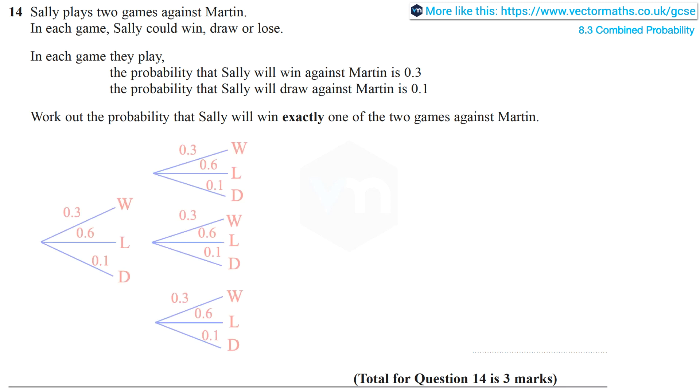In the tree diagram, I have completed 0.6 as the probability of losing, and that is because the sum of the probabilities of the mutually exclusive and exhaustive events across a branch must add to 1.